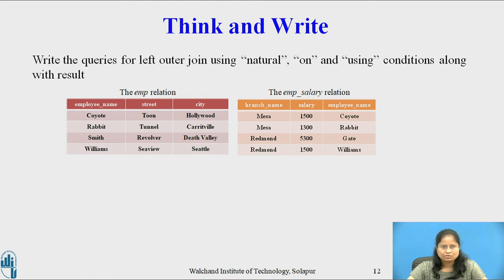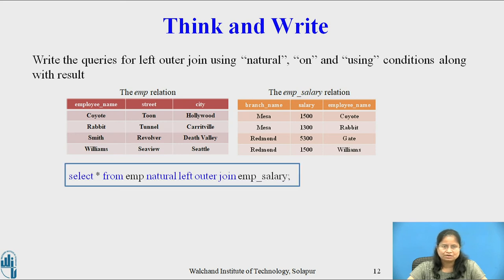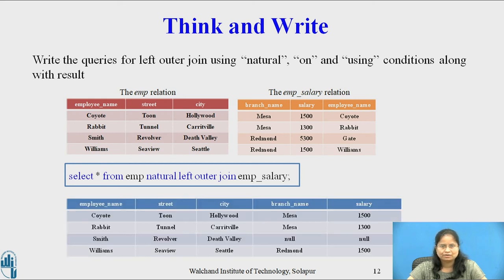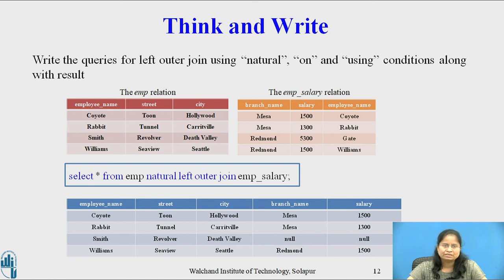I hope all of you have completed this activity. Consider the relations employee and employee salary. First, consider the left outer join using the natural condition. The query is: SELECT * FROM emp NATURAL LEFT OUTER JOIN emp_salary. The result is shown in the table. The common attribute employee name appears only once, and the tuple for Smith includes null values for the attributes that appear only in the employee salary schema, that is, branch name and salary.